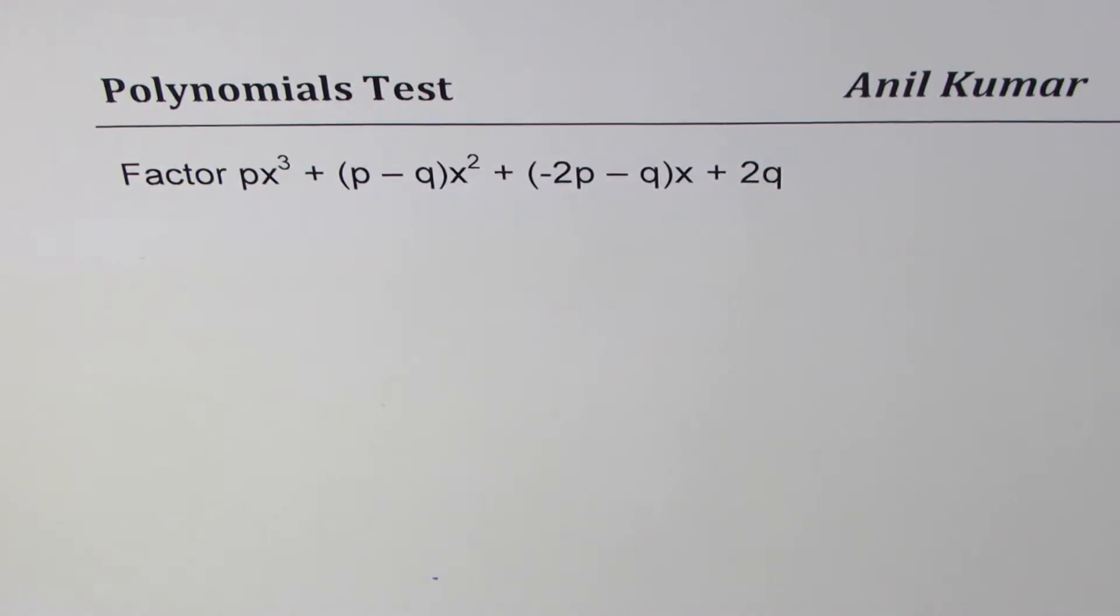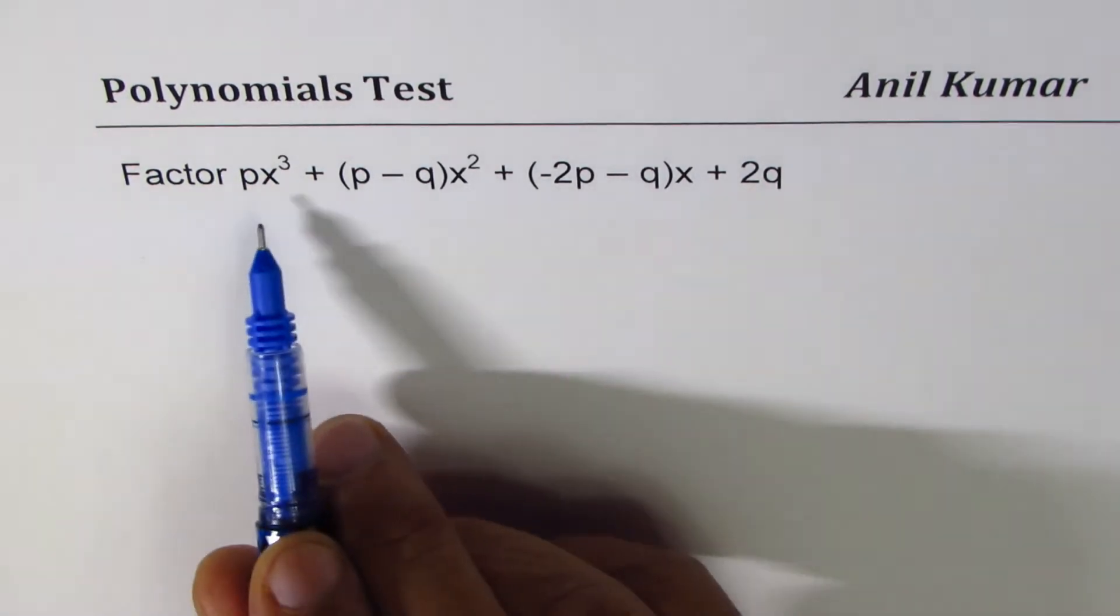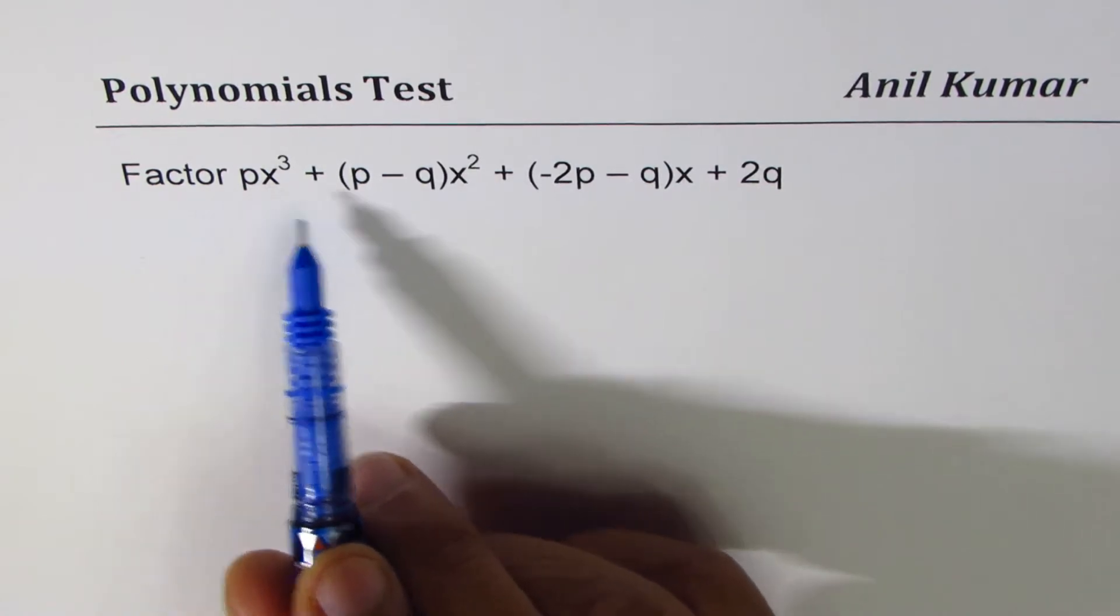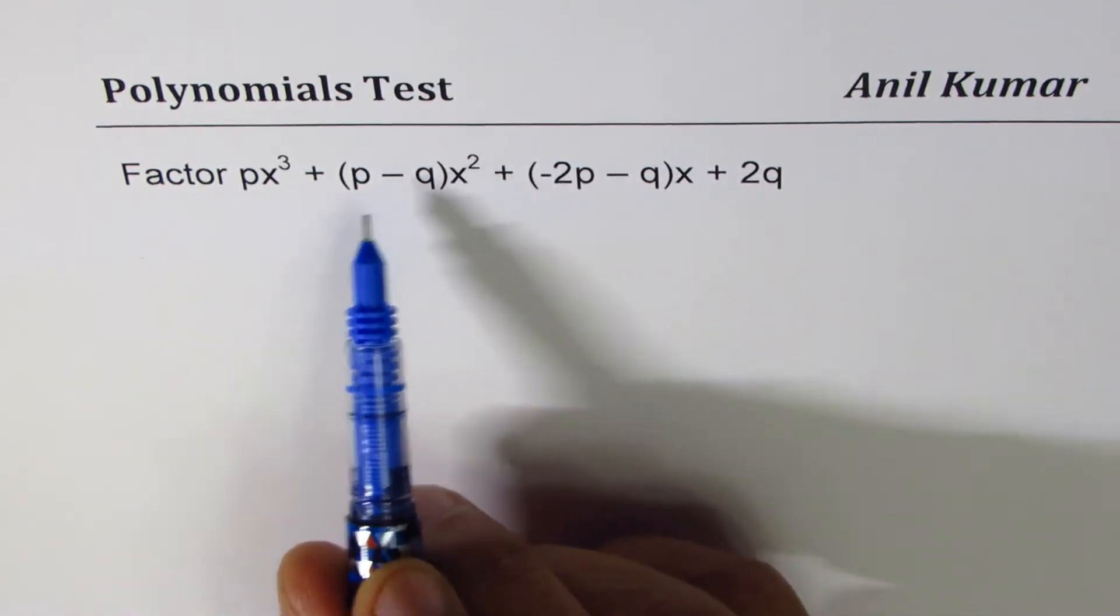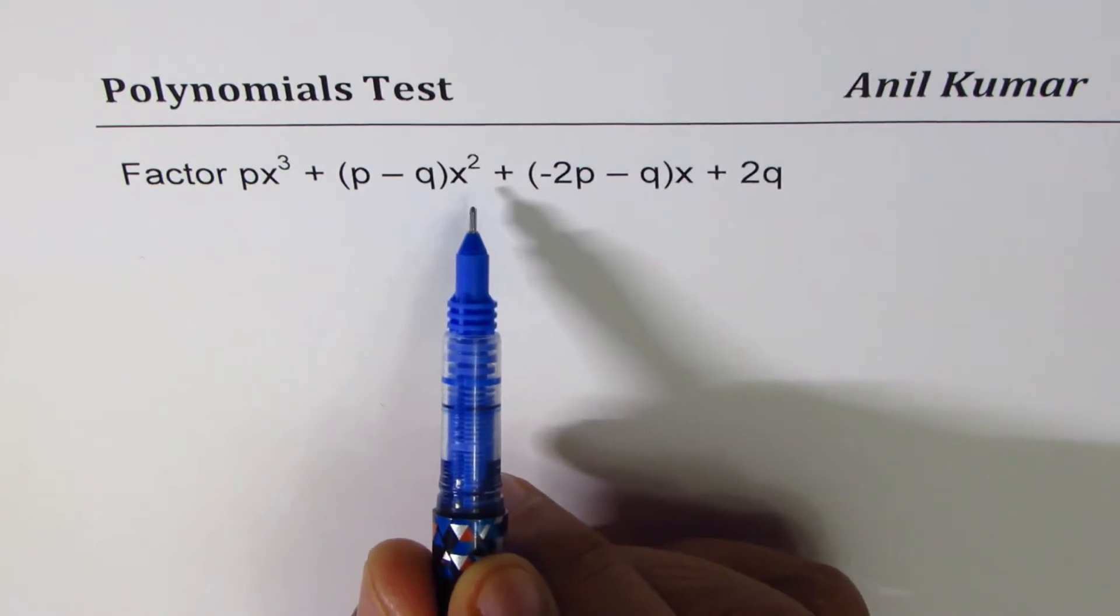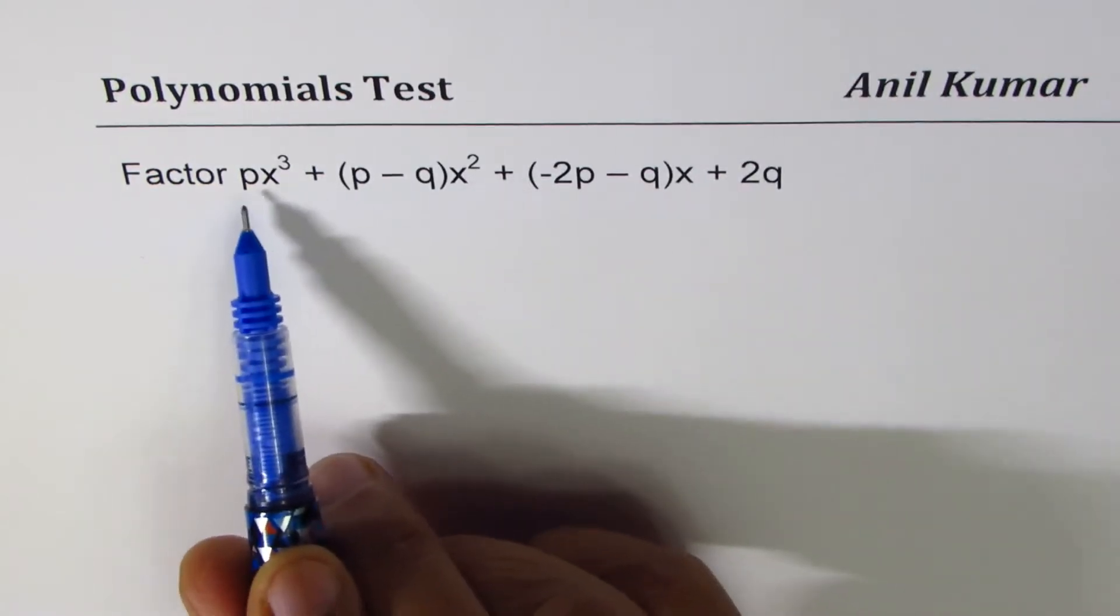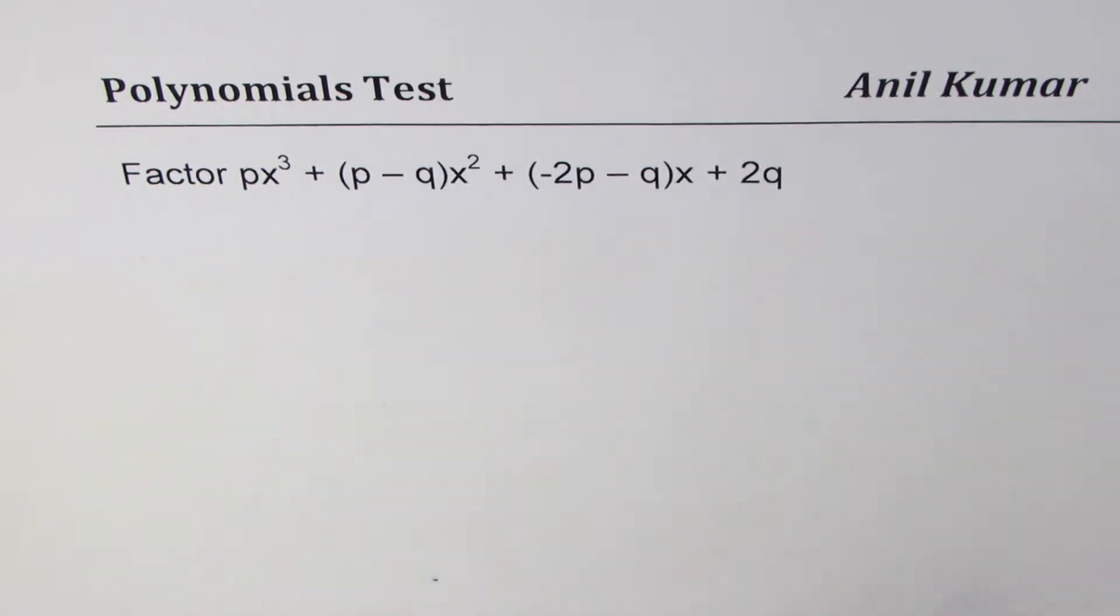Now it looks very scary, right? We don't have numbers, we all have these variable kind of things. Now this is a polynomial equation in x. We'll treat p and q as some constants.